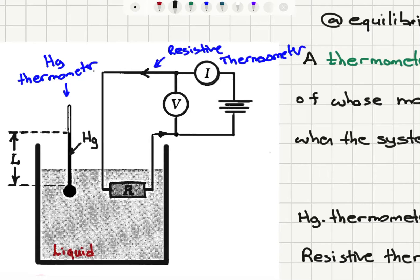For the resistive thermometer, we apply a constant voltage across the resistor, measure the current flowing through it, and V divided by I gives us the resistance R. This resistance changes with temperature. When the temperature of the liquid equals that of the resistor, we get a corresponding value of resistance from our setup.